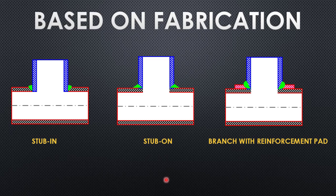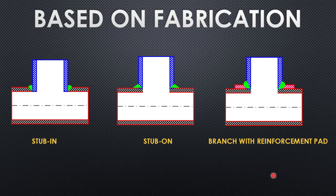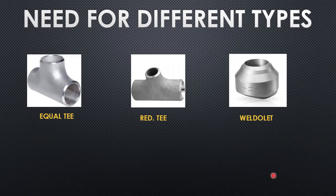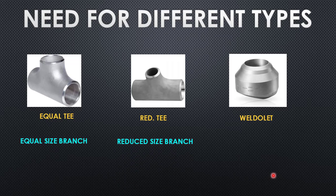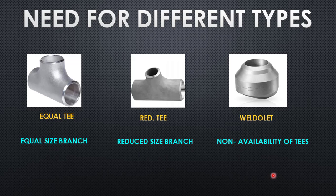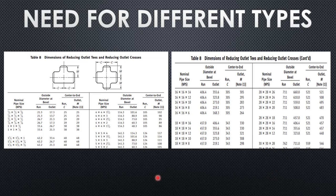Now it's time to understand the need for different types. We have equal T, reduced T, and weld outlet. Equal T is for equal size branches and reduced T is for reduced size branches — but weld outlet is also used for reduced size branches. The reason we need weld outlet is because reduced T is not always available. From the manufacturing table in American standard B16.9, we can identify the availability of reduced T, and for sizes where reduced T is not available, we use weld outlet.